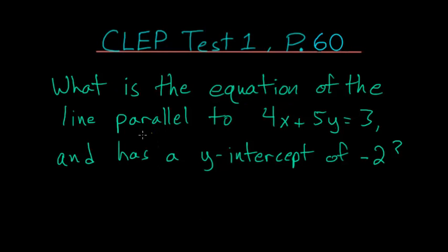What is the equation of the line parallel to 4x plus 5y equals 3 and has a y-intercept of negative 2? So the thing with parallel lines is that they have the same slope.